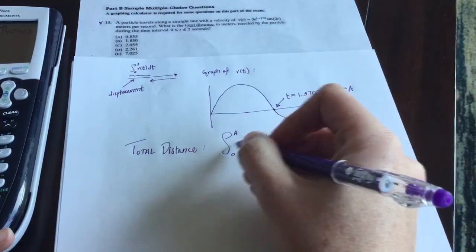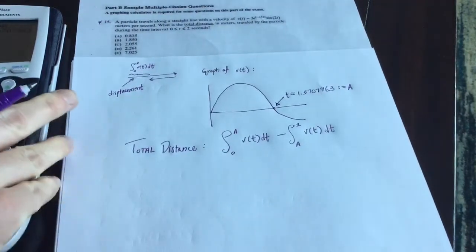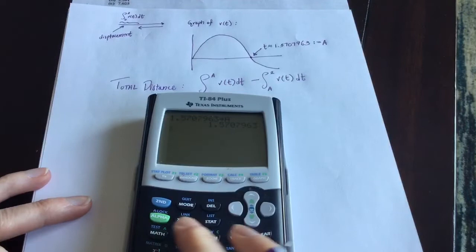But you don't add them together because that would have been the displacement value. So you want to have this value as is, but then you want to add the opposite of the second piece. So let's go ahead and do that.